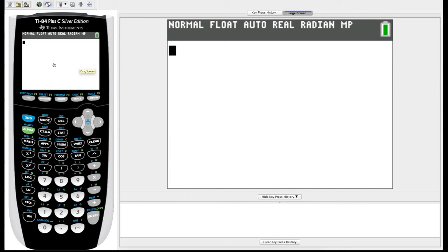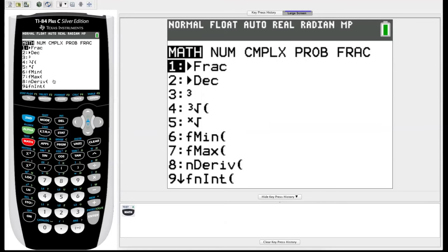The first thing I'm going to show you is the probability menu. To find it we go down to the math key, hit math, and you'll notice along the top there's one that says prob for probability, so we'll arrow over to probability.